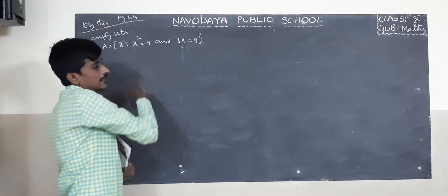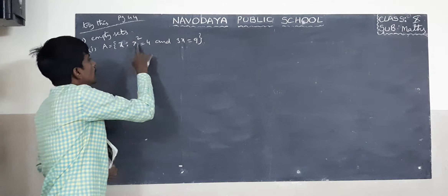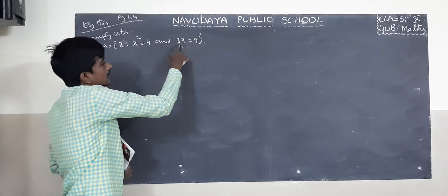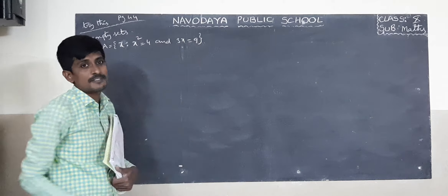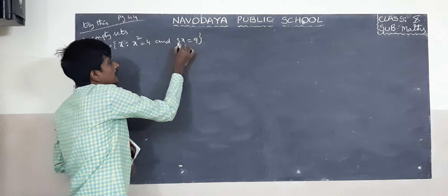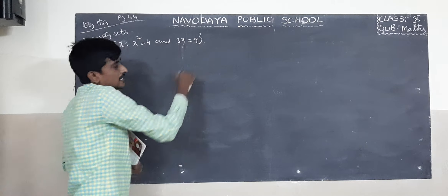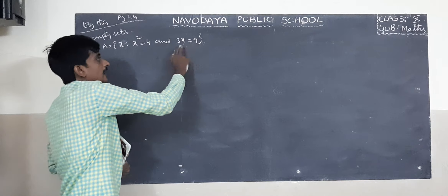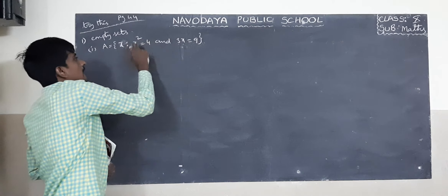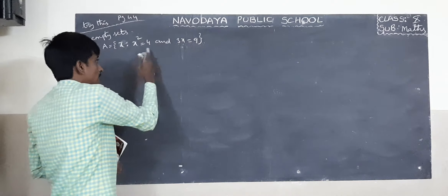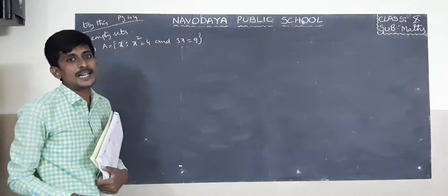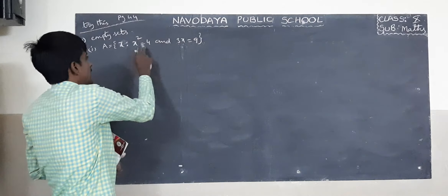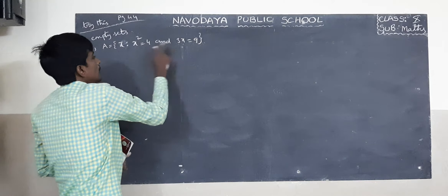For example, substitute x equals 2: 2 squared equals 4 — yes, satisfied. But 3 times 2 equals 6, not 9 — not satisfied. Try x equals 3: 3 times 3 equals 9 — yes, satisfied. But 3 squared equals 9, not 4 — not satisfied. So there is no such number that satisfies both equations simultaneously.